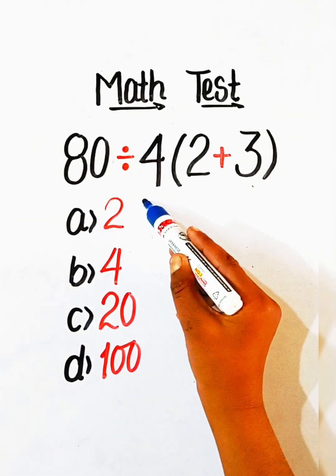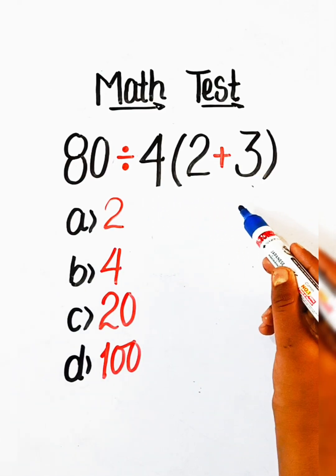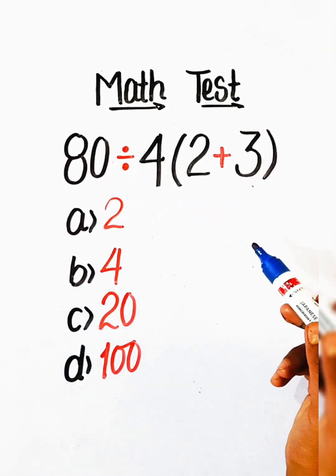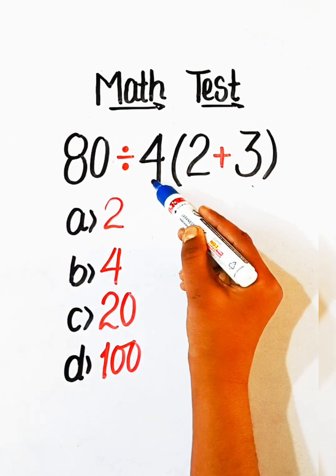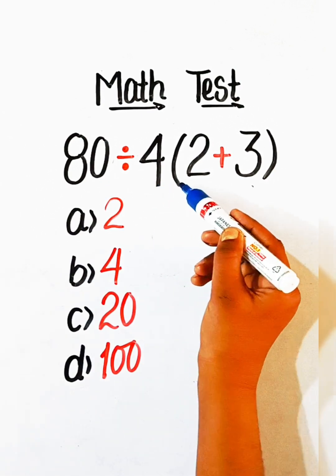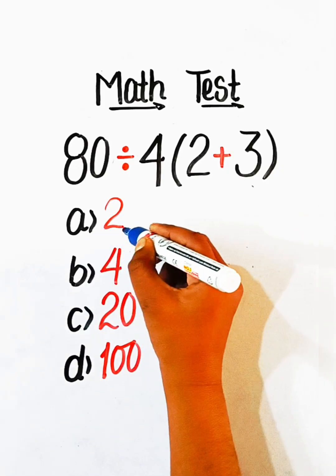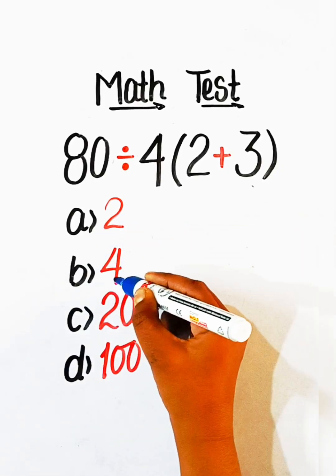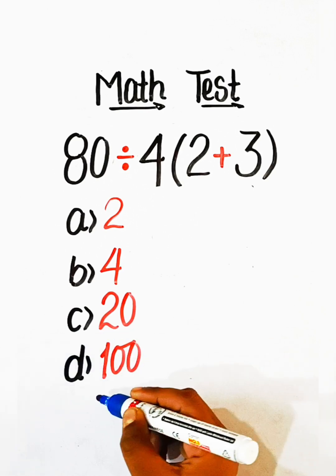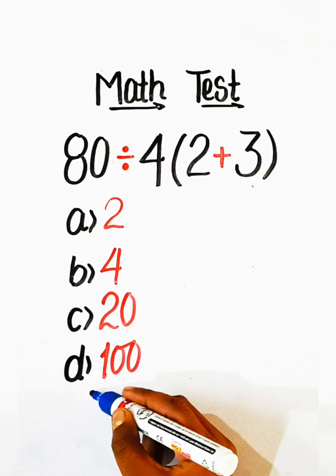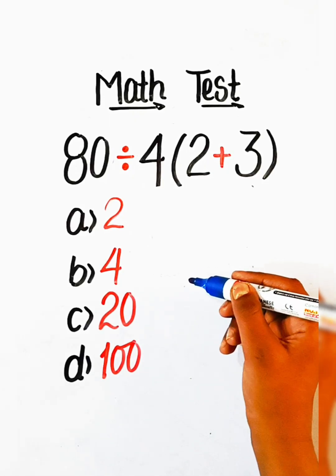Hello everyone, welcome back to my YouTube channel. In this video we will solve this basic math problem: 80 divided by 4 under bracket 2 plus 3 equals to what? Option A: 2, Option B: 4, Option C: 20, or Option D: 100. So try to solve it.